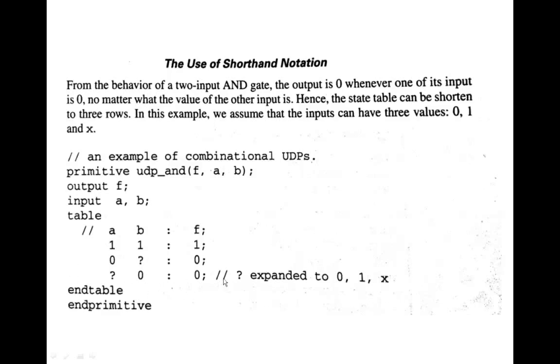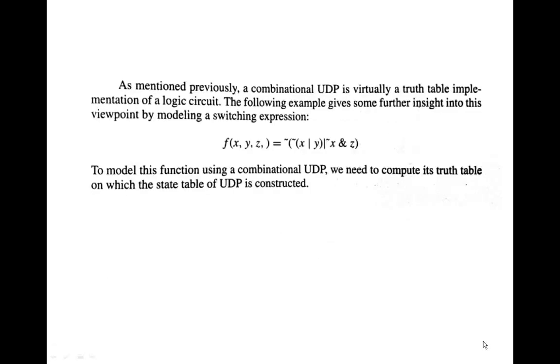And similarly, if A happens to be a question mark, that is it would be a 0, 1 or x, then if b happens to be 0, then output is 0. So this is a shorthand notation, otherwise we would have here elaborative description of this table: 0, 0 for 0, 1 like that, and here as well 0, 0 and then 1, 0. So by having a shorthand notation we can concise our description of the table.